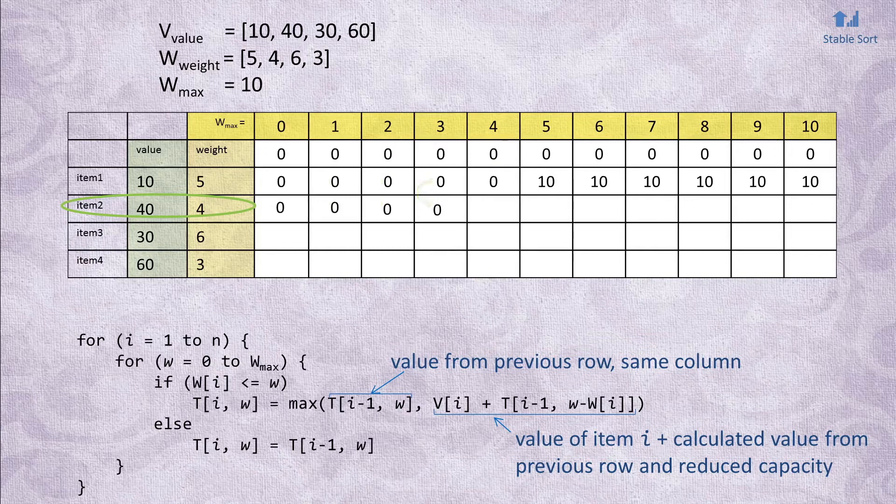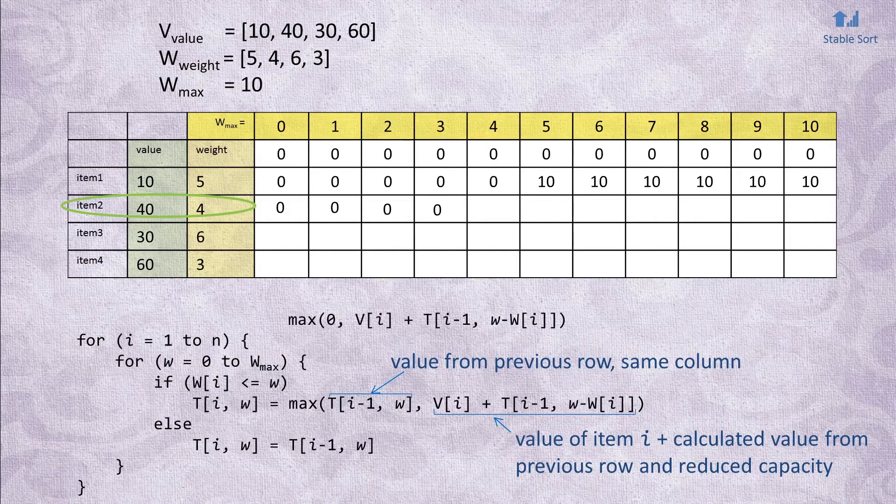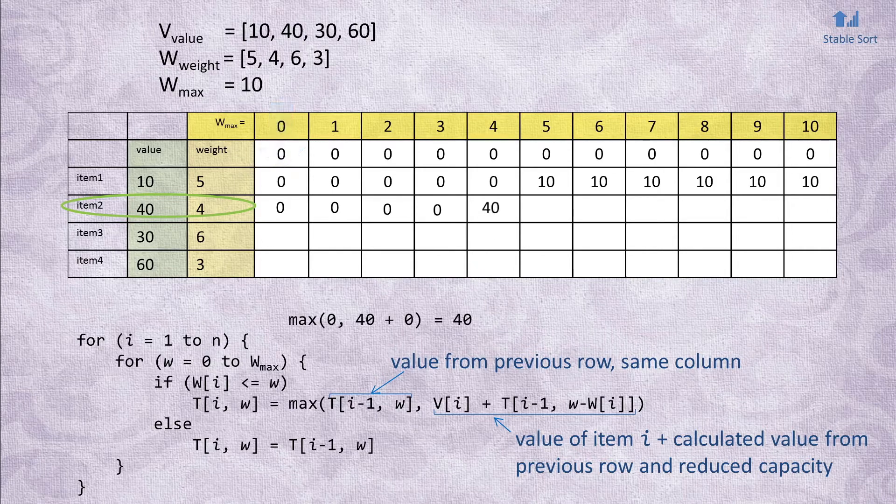But at capacity 4, we can finally fit this item, so again we evaluate the max statement. Should we not include this item and just take the value calculated for this capacity up to this point, which is the cell above? Or should we include item 2 along with previously calculated value from the previous row, without the capacity taken up by item 2? This would be value of 0 plus 40. Taking the max of the two answers, we save off 40.